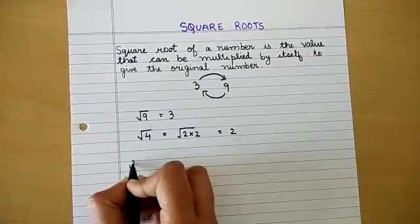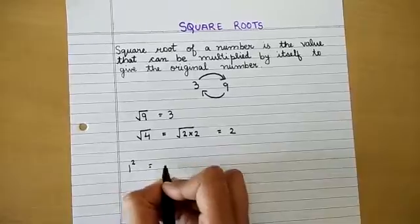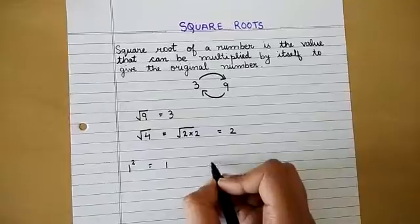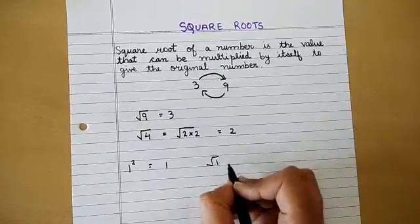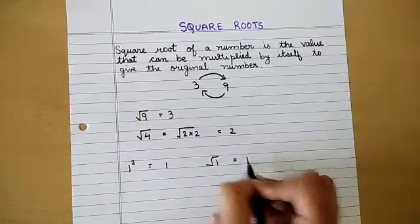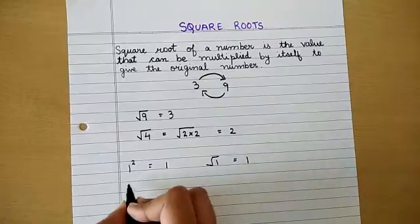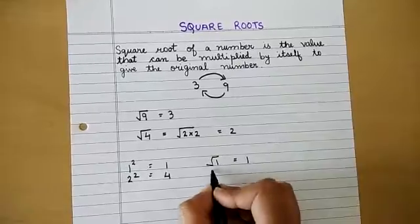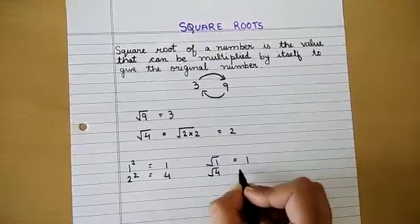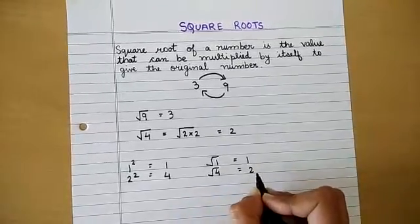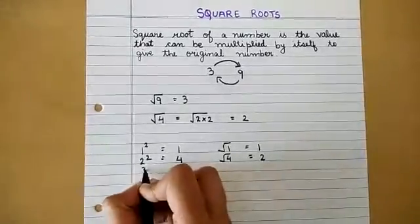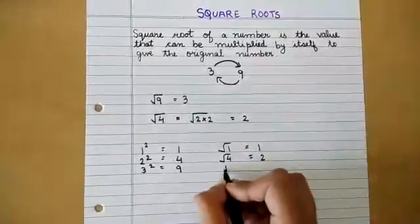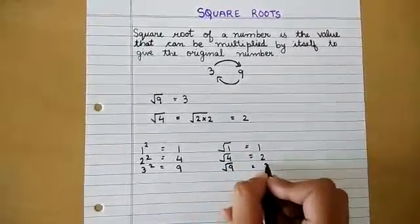Now we can see that the square of 1 is 1, because 1 multiplied by 1 is always 1, so the square root of 1 is 1. If the square of 2 is 4, then the square root of 4 is 2. The square of 3 is 9, so the square root of 9 is 3.